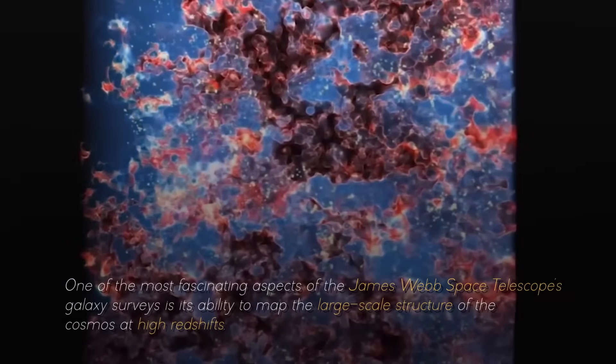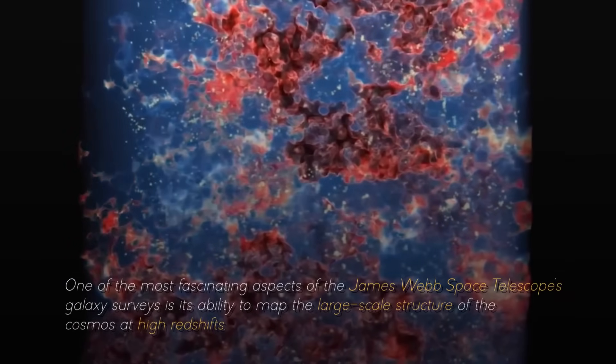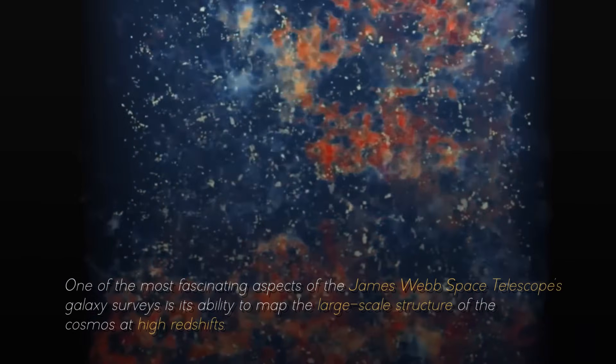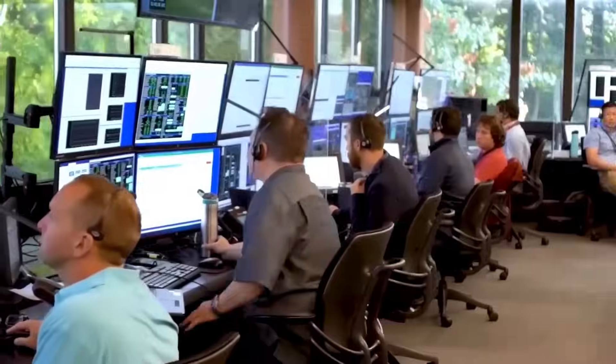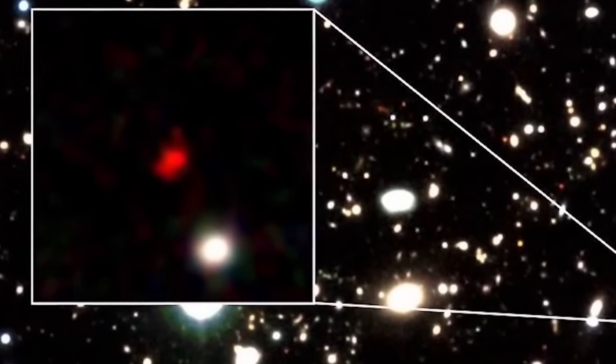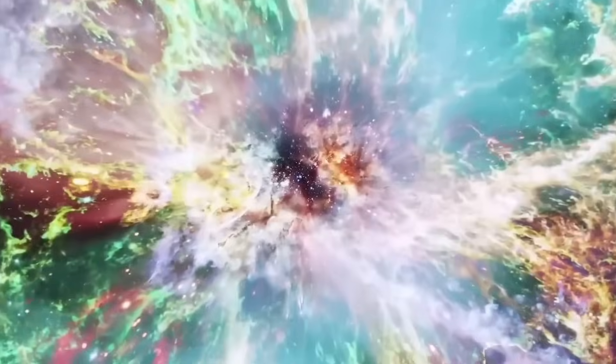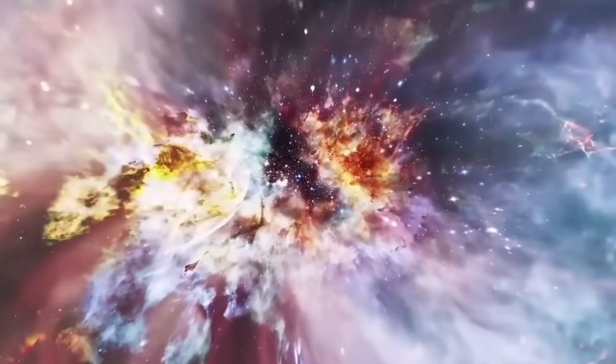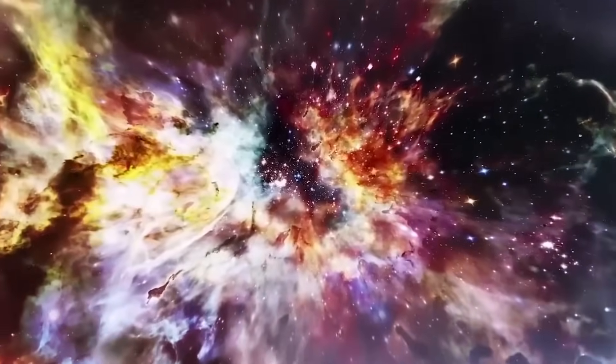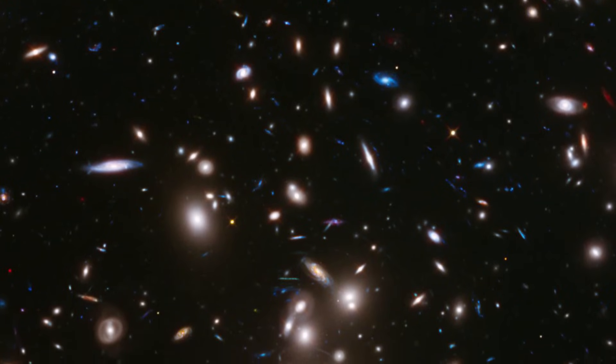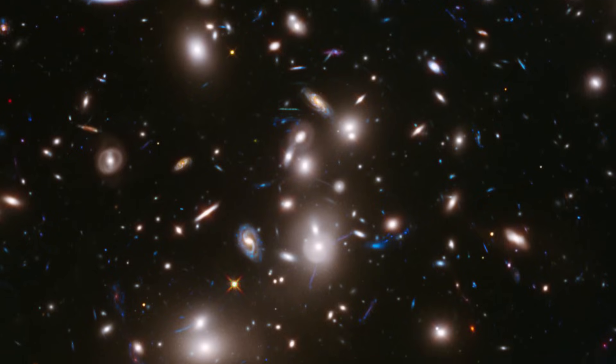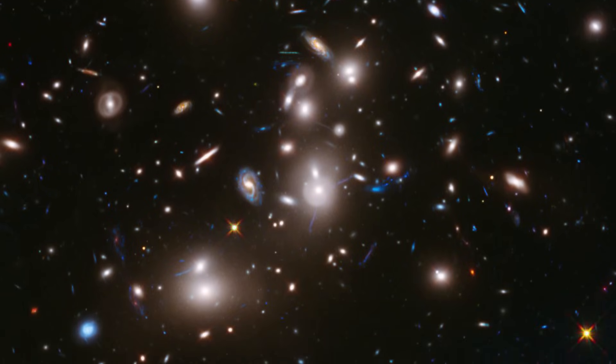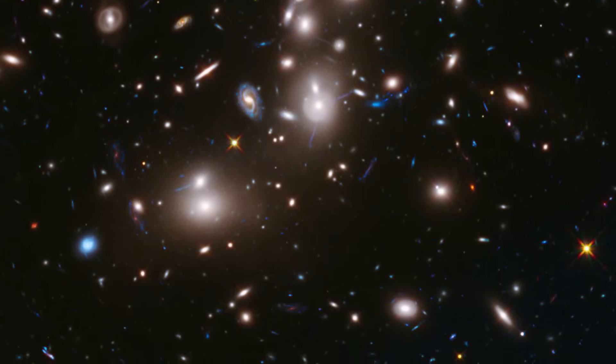One of the most fascinating aspects of the James Webb Space Telescope's galaxy surveys is its ability to map the large-scale structure of the cosmos at high redshifts, when galaxies were still young and grouped into large clusters known as protoclusters. These protoclusters are the predecessors of today's galaxy clusters, which are the largest gravitational structures in the universe. By studying these protoclusters, we can learn about the interactions between galaxies, their growth and merger, and how they influence the formation of stars and planets.